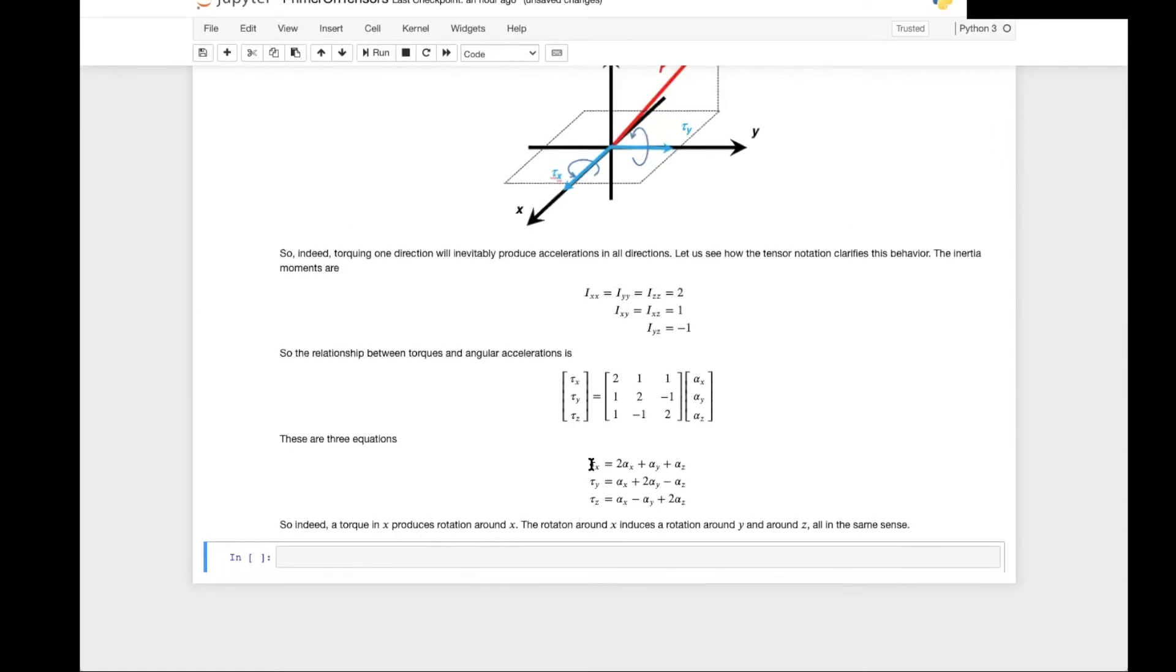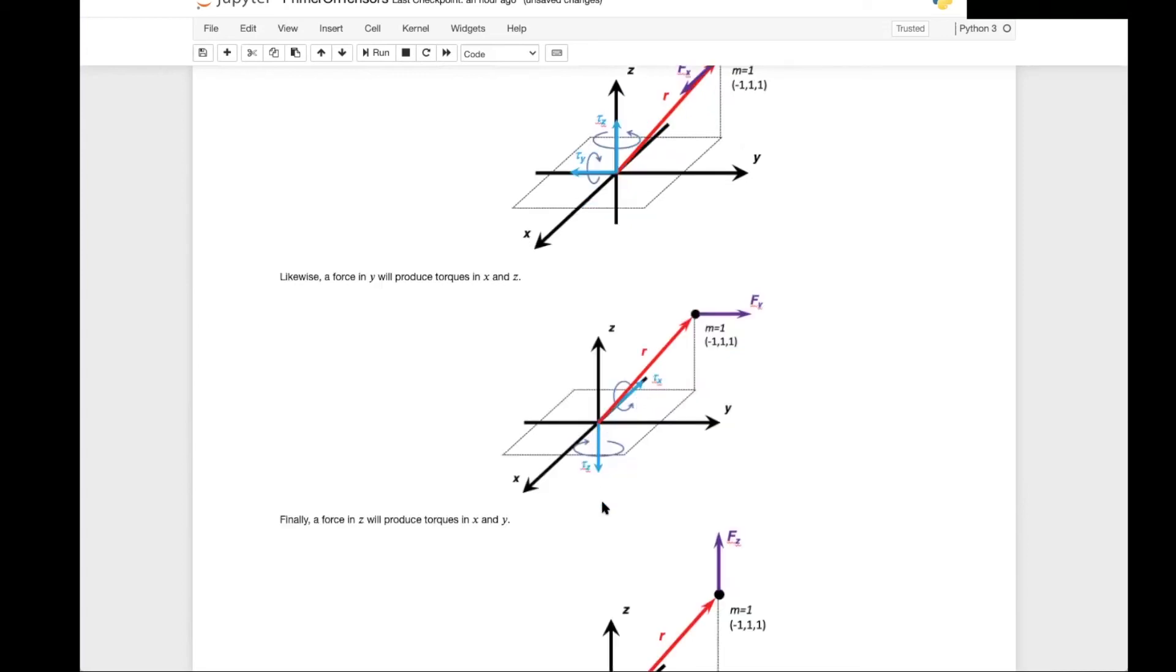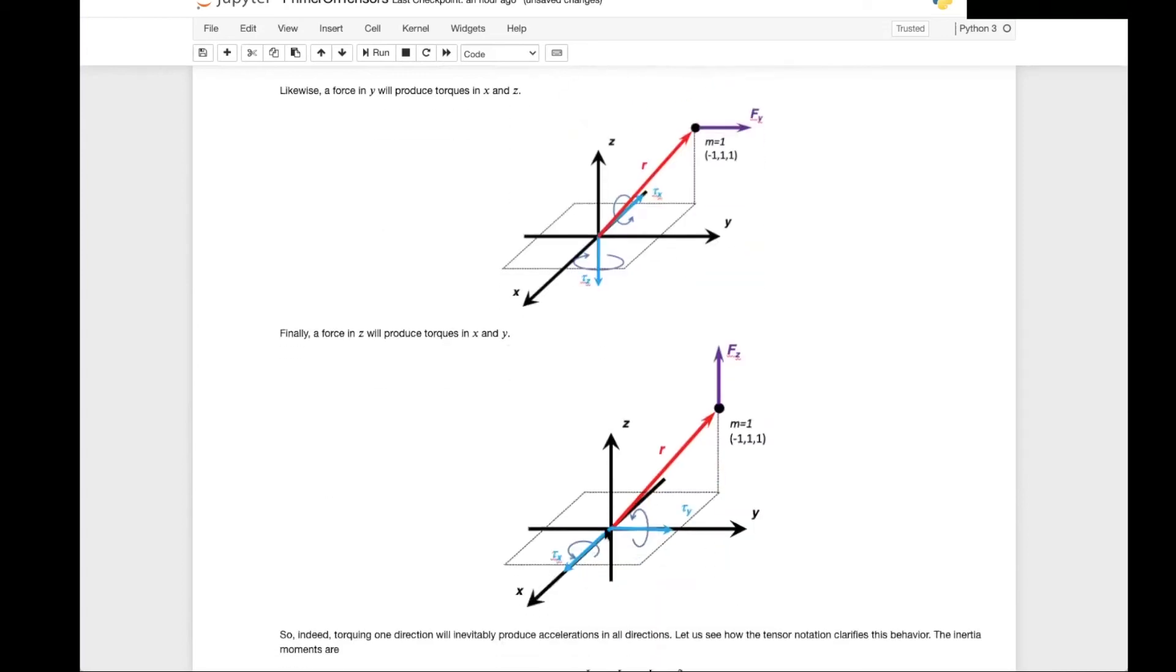So indeed a torque in x produces a rotation around the x-axis, but the rotation around the x-axis also induces rotations around the y and the z-axis all in the same sense that all the three components are positive. That's what we see here. If you have a torque in the x direction, you cannot have this torque without a torque in y and also torque in z. And notice that they have the same sign. If the torque in x is positive, the torque in y is positive and the torque in x and z also have the same sign.